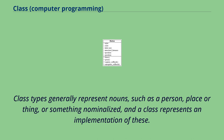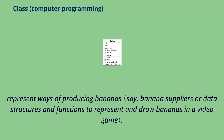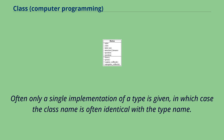Class types generally represent nouns, such as a person, place, or thing, or something nominalized, and a class represents an implementation of these. For example, a banana type might represent the properties and functionality of bananas in general, while the AbBanana and ZizeBanana classes would represent ways of producing bananas. The AbBanana class could then produce particular bananas. Instances of the AbBanana class would be objects of type banana. Often only a single implementation of a type is given, in which case the class name is often identical with the type name.